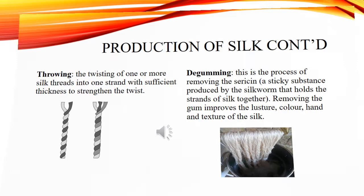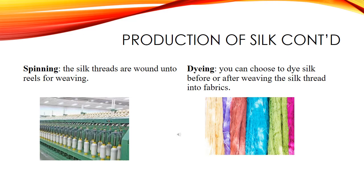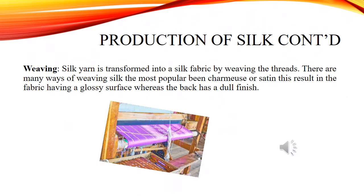Spinning: The silk threads are wound onto reels for weaving. Dyeing: You can choose to dye silk before or after weaving the silk thread into fabrics. Weaving: Silk yarn is transformed into a silk fabric by weaving the threads.